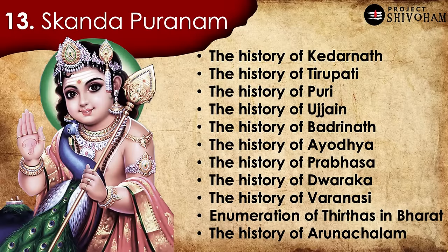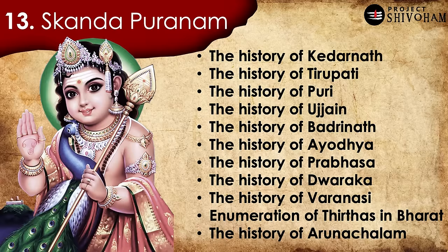Number 13, Skanda Puranam: it is the largest of all 18 Puranas — so huge, so wide, so deep, and so complex. It has thousands of chapters and more than one lakh shlokas. In terms of volume, it is four times bigger than Sri Ramayanam. It covers the history of Kedarnath, Thirupati, Puri, Ujjain, Badrinath, Ayodhya, Prabhasakshetra, Dwaraka, Varanasi, Arunachalam, and the enumeration of various tirthas in Bharat. Almost every sacred place in Bharat has a place in Skanda Puranam, and almost every festival we celebrate has a reference from it.